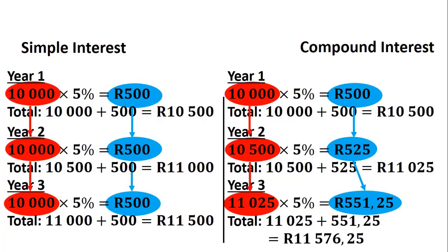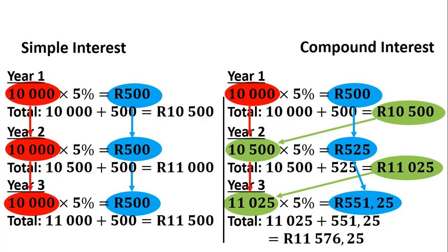At the end of year one I've made 10,500, so instead of using only 10,000 as in simple interest, I use my total from year one in my next calculation, getting a little bit more interest. At the end of year two, that amount becomes my starting amount for year three, giving even a little more interest. At the end of year three, my compound interest is more than my simple interest — it doesn't look like very much, but the longer you leave it, the greater the effect of compound interest versus simple interest.